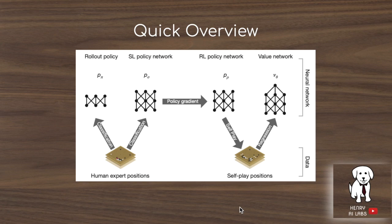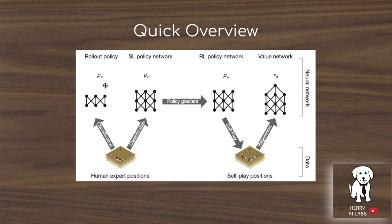This image from the paper provides a great overview of how the three policy networks are trained. Two networks are trained with supervised learning on human expert moves, mapping from state representation to the actions taken by experts. These are the rollout policy and the supervised learning policy network, denoted P-sub-sigma and P-sub-pi. The rollout policy is a smaller, faster network with two microseconds per inference compared to three milliseconds for the larger network. The supervised learning policy network is used to initialize the reinforcement learning policy network and to control the branching factor of the Monte Carlo tree search.